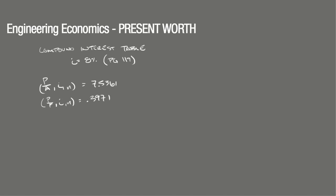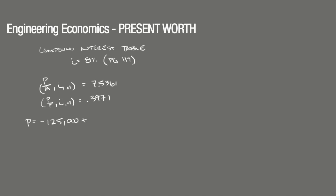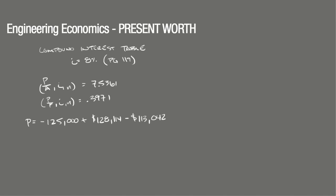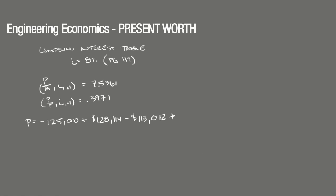Plugging these values into the equation, we get: present worth = negative $125,000 (initial cost), plus $17,000 × 7.5361 = $128,114, minus $15,000 × 7.5361 = $113,042, plus $25,000 × 0.3971 = $9,928. So our total present worth is negative $100,000. Therefore, the present worth of all investments over the 12-year period is negative $100,000, meaning it wouldn't be a wise investment without further investigation into other benefits.